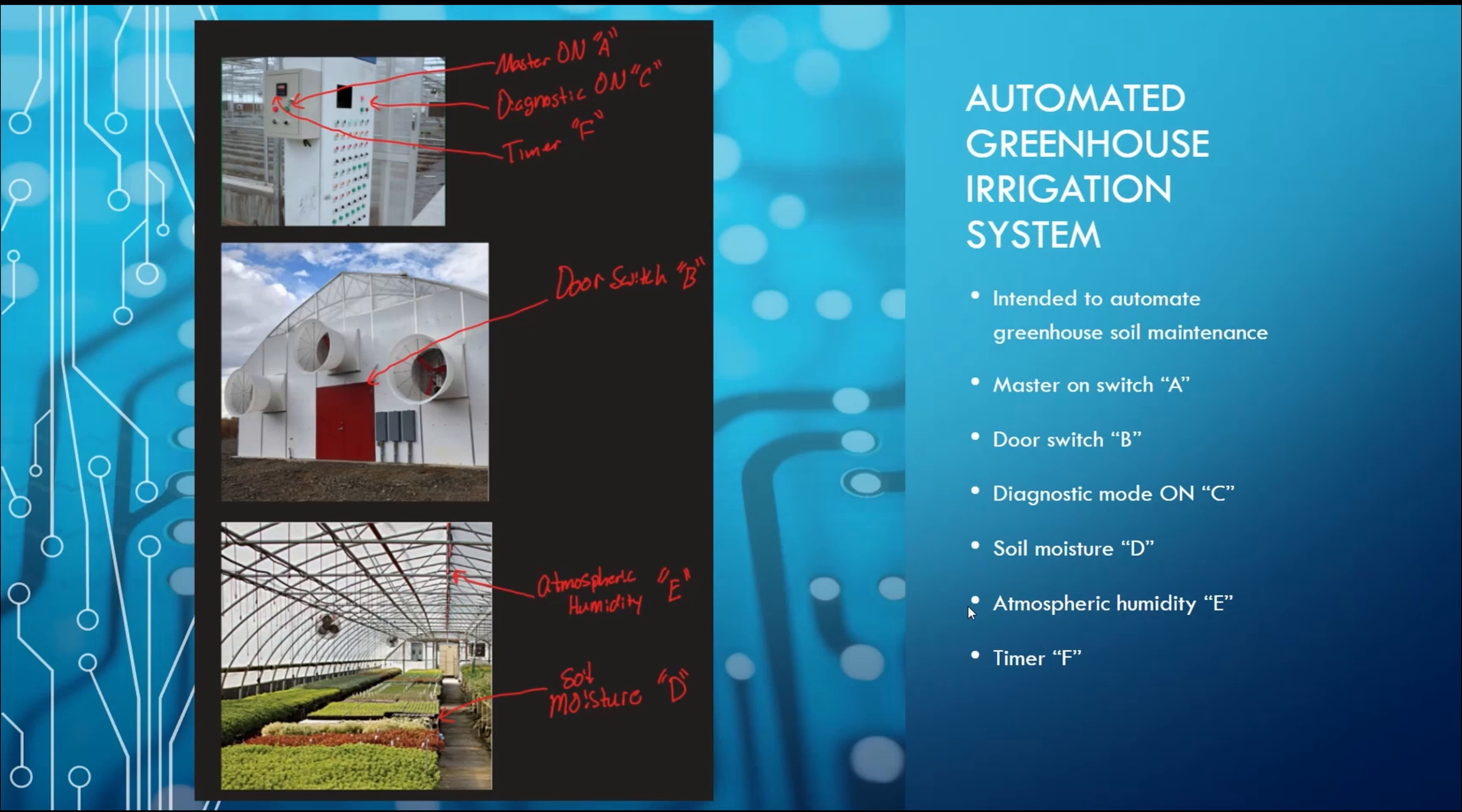For system controls, we have a total of six inputs. We have a master on switch, input A, that can be shut off by the operator seasonally or when work inside the greenhouse is being performed. For safety, we also monitor the personnel door switch, input B, to prevent turning on the irrigation system while workers or customers are inside the greenhouse.